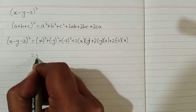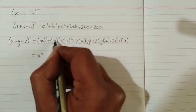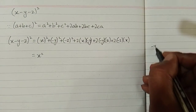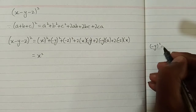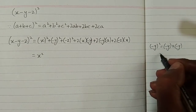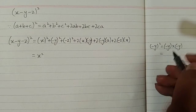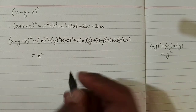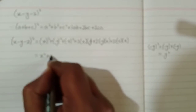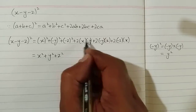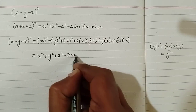Now, the square of x is x square. The square of minus y can be written as minus y multiplied by minus y. Minus multiplied by minus is plus, and y multiplied by y is y square, so we have plus y square. Similarly, the square of minus z is plus z square.